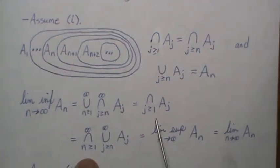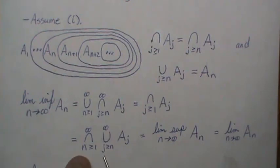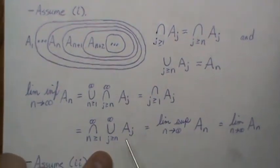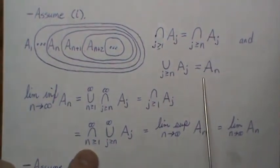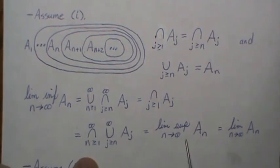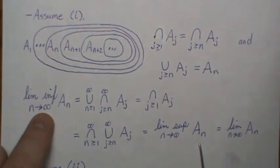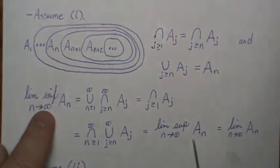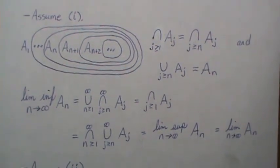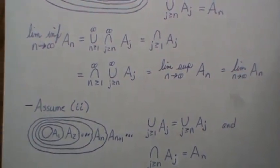We put that property in here, swapping n's and j's to be consistent with the standard definitions. We then get an expression that turns out to be the limit supremum of A_N. So on a monotone non-decreasing sequence of sets, the limit infimum and the limit supremum are the same, and we just call that the limit of A_N.